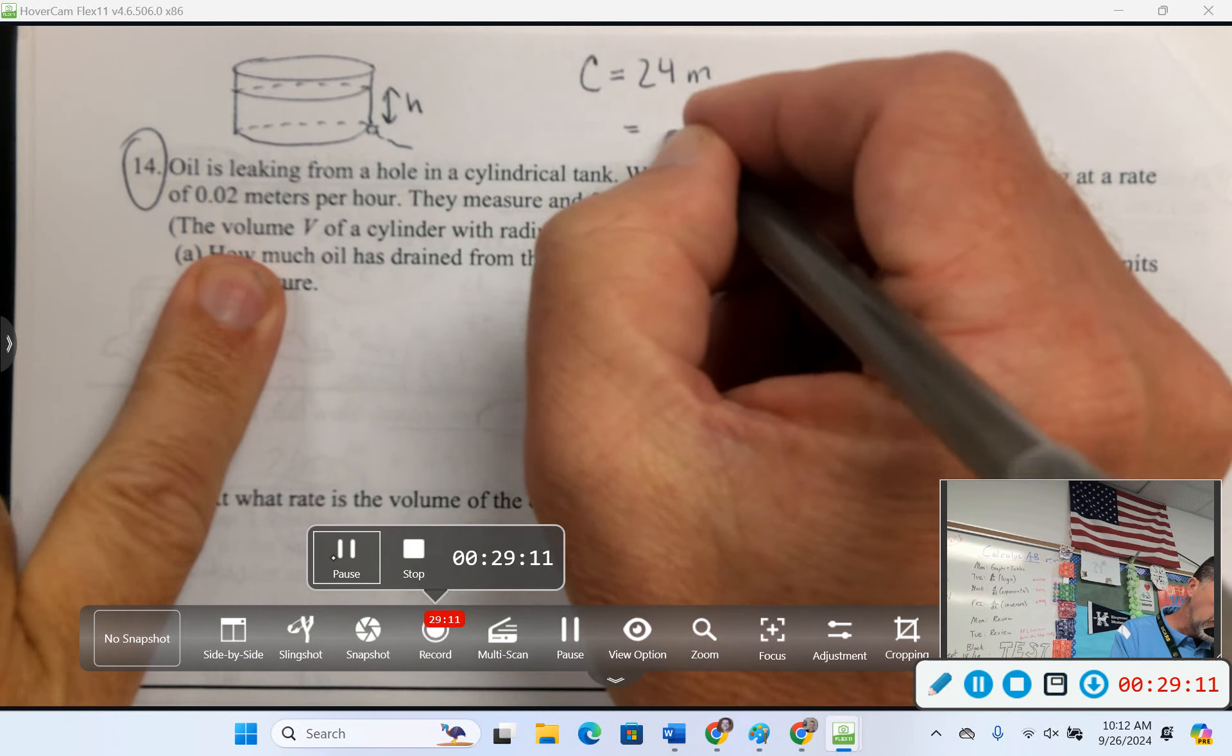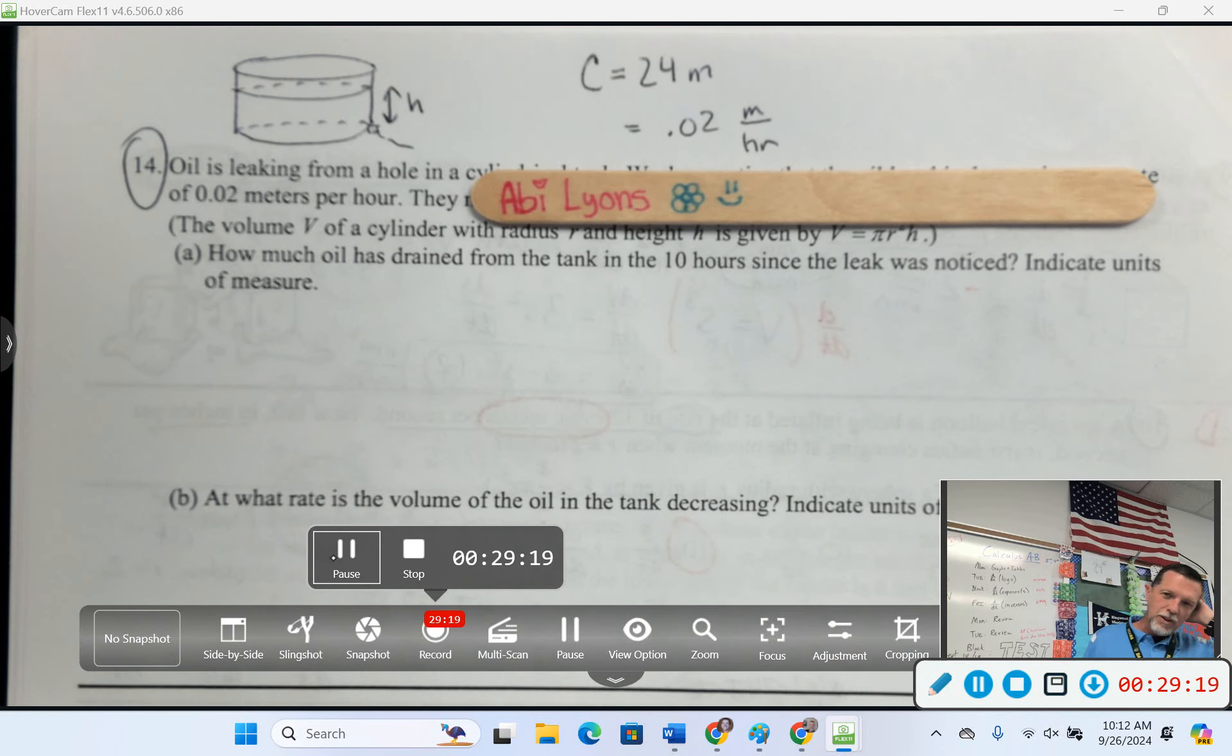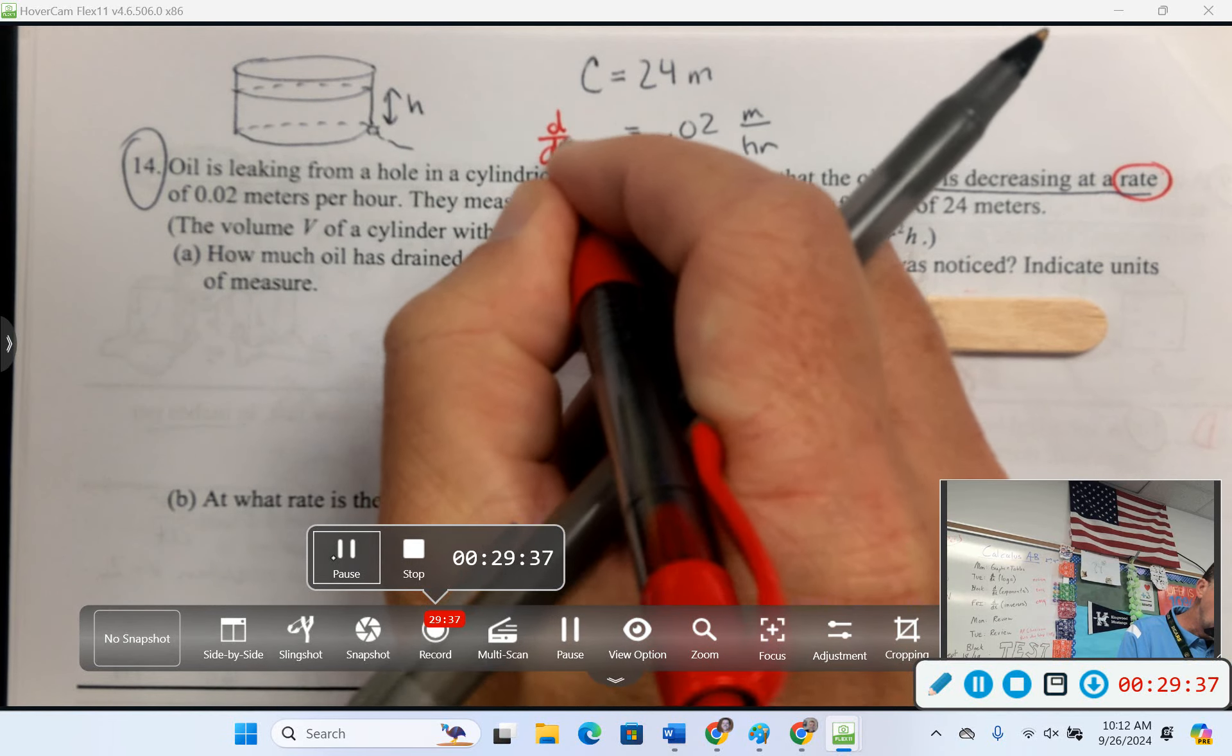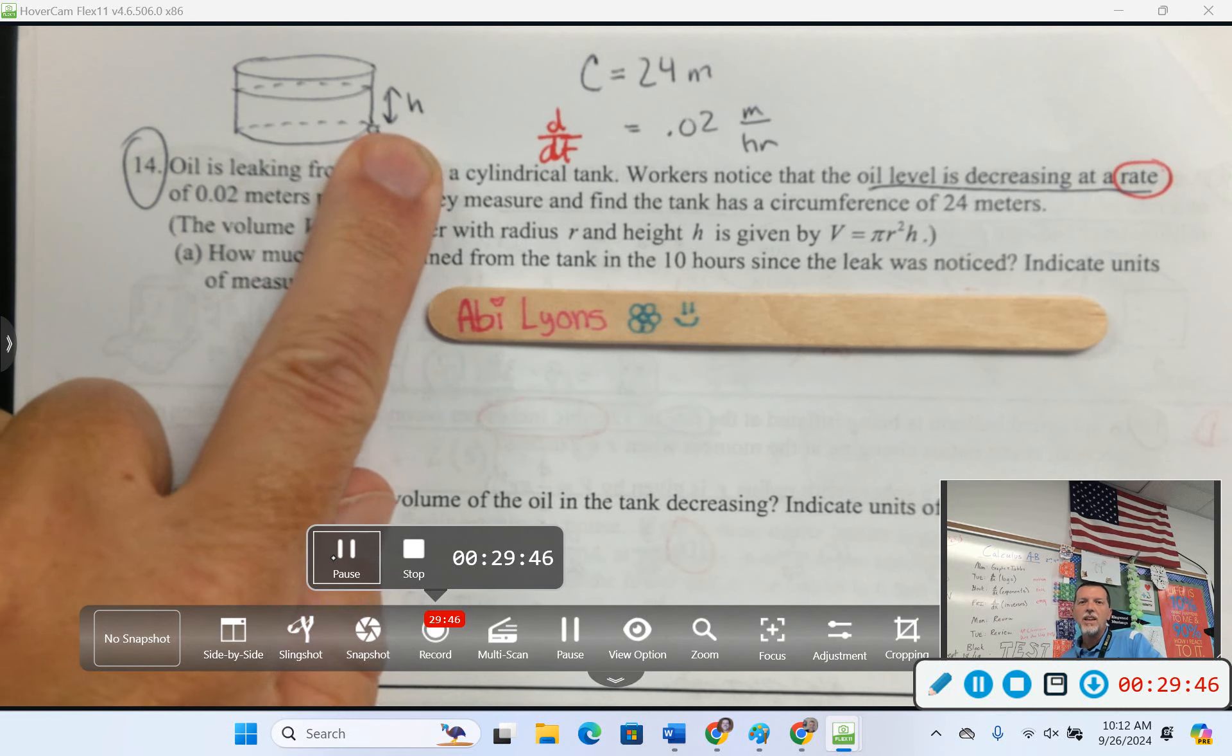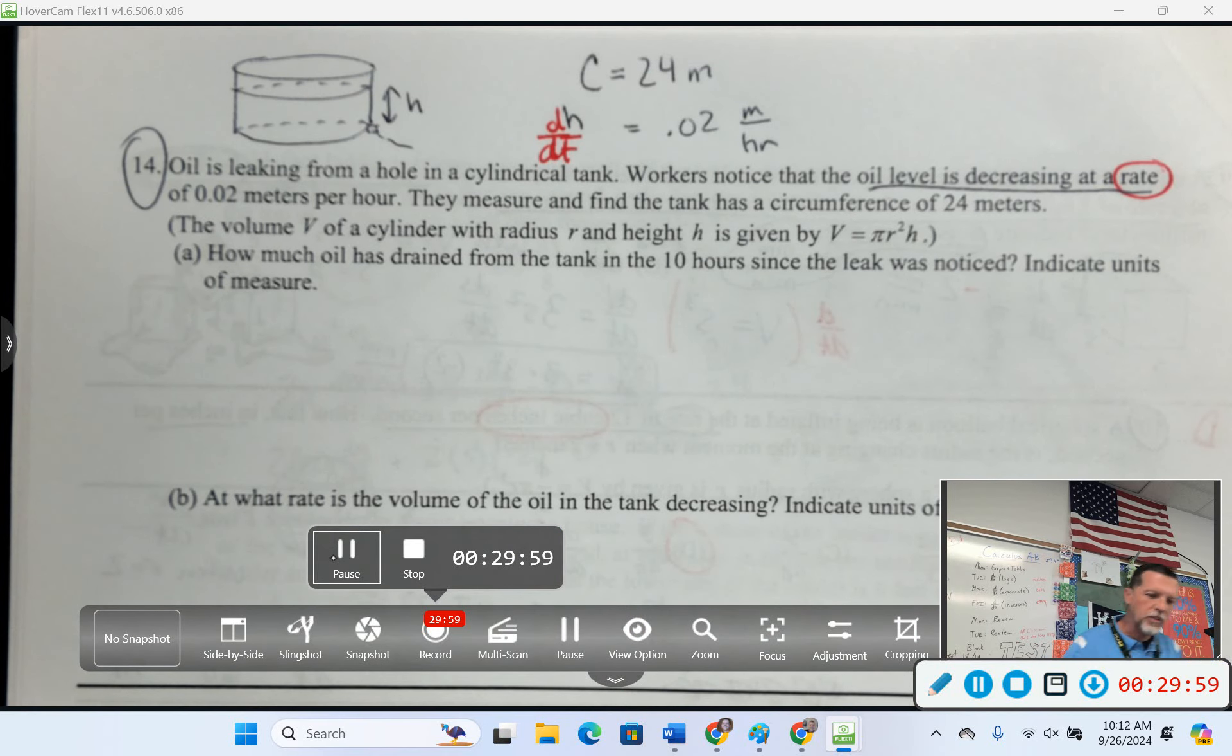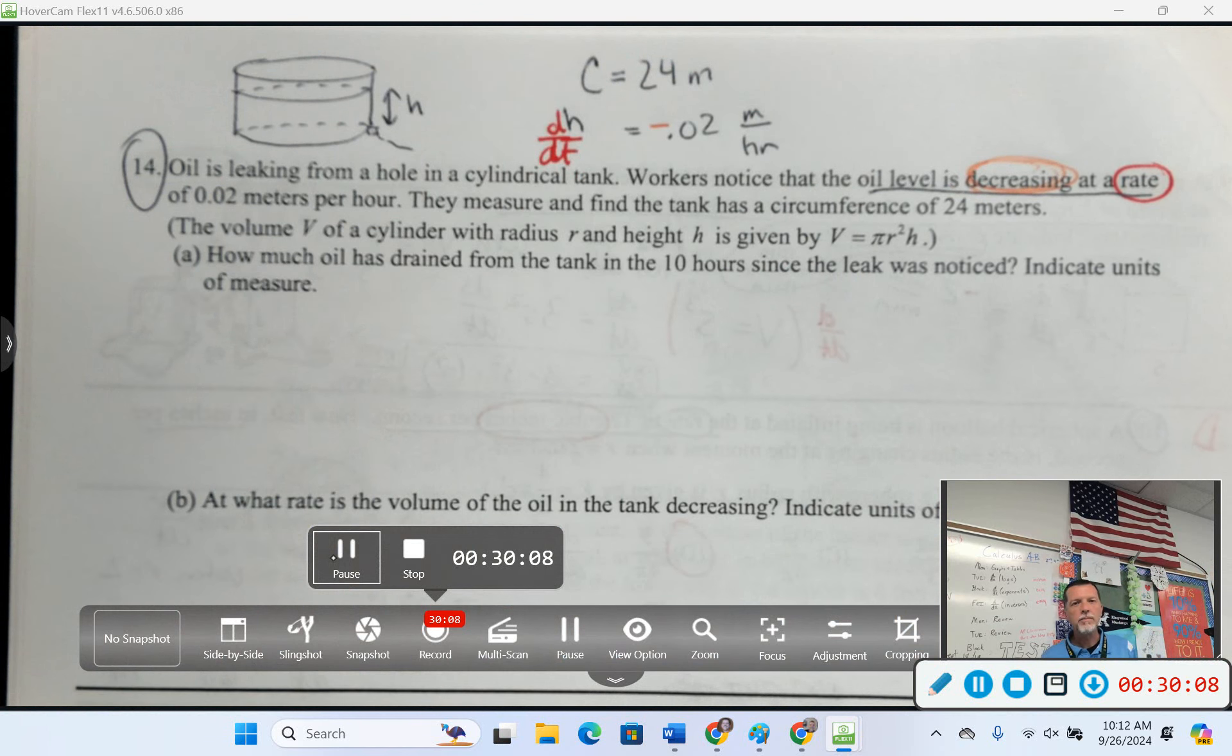Even measuring the diameter might be hard, because you'd have to make sure you're measuring a diameter, not a chord. So it seems weird they would give you the circumference, but when you think about if you actually wanted to measure this tank, the circumference would be the easiest and most accurate thing to measure. So that's why we get 24 meters. Okay, something is 0.02 meters per hour. Abby, what's 0.02 meters per hour? Like, what do I want to label that with? It's a rate, so it's something dt. So what in my picture is changing? So it wouldn't be the volume, it would be the height or the depth of the oil. So the height of the oil is going down. Whoops, so why am I saying oops? Negative, decreasing, height is going down.